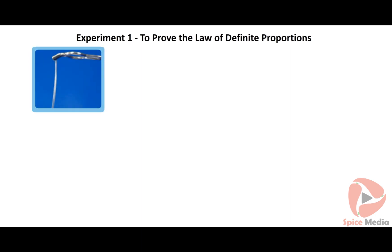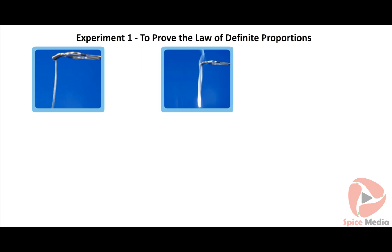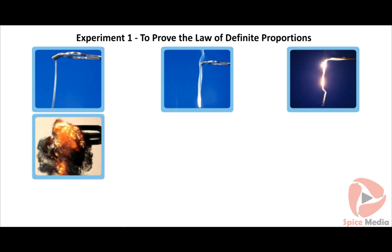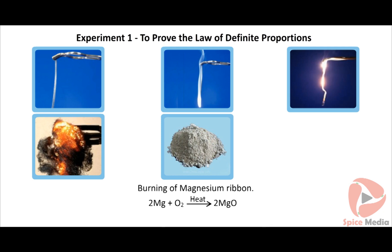Take magnesium ribbons of different lengths — roughly 0.5 cm, 1.0 cm, 1.5 cm, and 2.0 cm — weigh them and record the weights. Burn each of them separately and collect the ash formed in different china dishes. Weigh the ash; the difference between the weight of magnesium and the ash gives the weight of oxygen that combined with magnesium in each case.